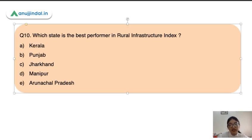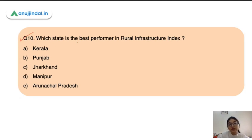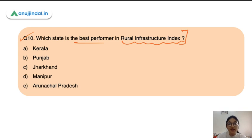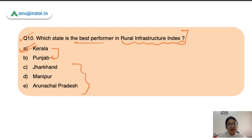The last question is: which state is the best performer in the Rural Infrastructure Index? Under NABARD's Rural Infrastructure Development Fund (RIDF), disbursement is higher to states where rural infrastructure is poor. The options are Kerala, Punjab, Jharkhand, Manipur, and Arunachal Pradesh. The correct answer is Kerala — it is the best performer, followed by Punjab. Jharkhand, Manipur, and Arunachal Pradesh are the worst performers, meaning rural infrastructure there is in very poor condition, and most northeastern and eastern states are performing poorly.